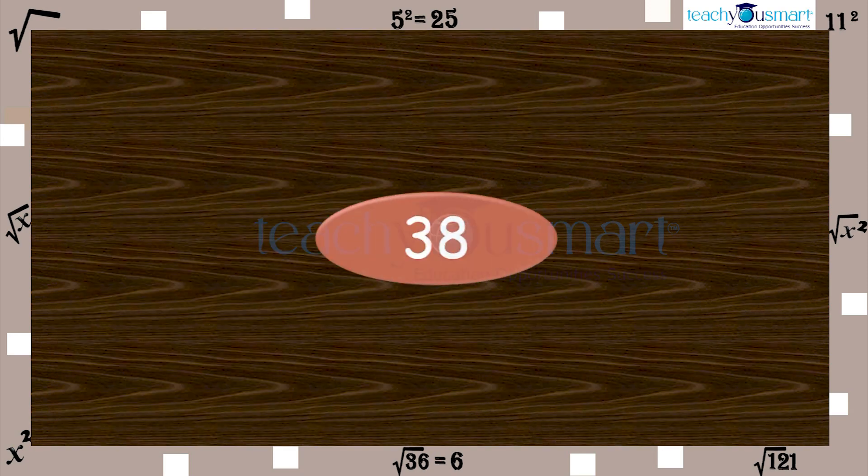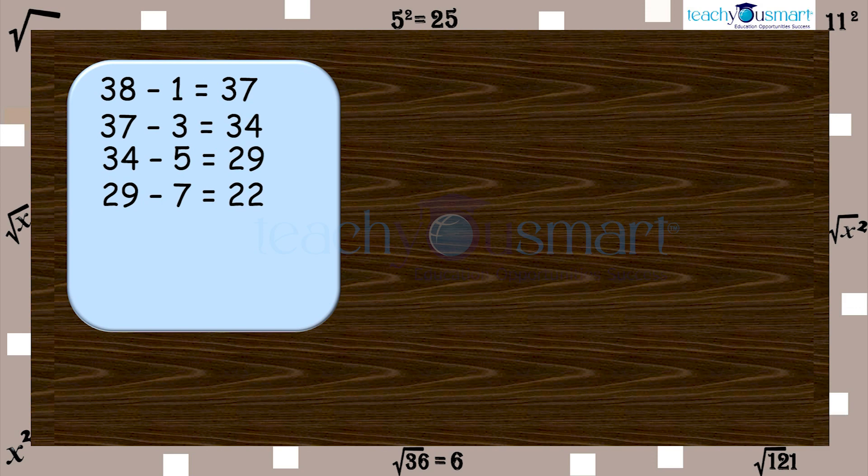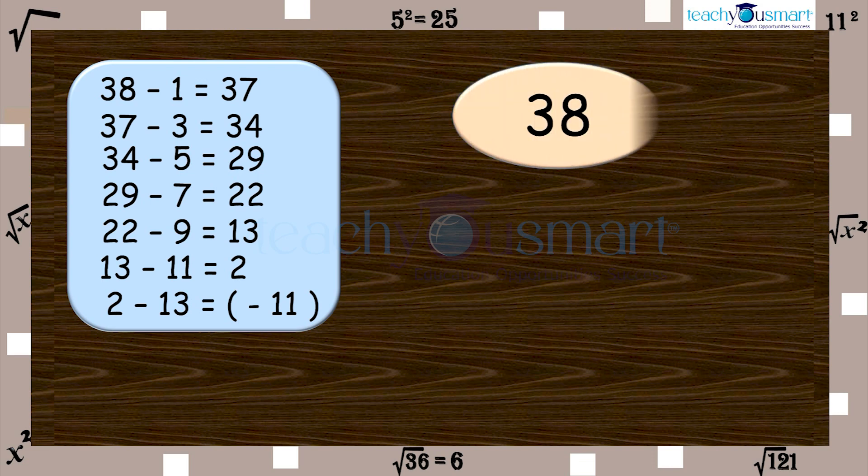Let's consider another number 38, and again do as above. 38 minus 1 equals 37, 37 minus 3 equals 34, 34 minus 5 equals 29, 29 minus 7 equals 22, 22 minus 9 equals 13, 13 minus 11 equals 2, 2 minus 13 equals minus 11. This shows that we are not able to express 38 as the sum of consecutive odd numbers starting with 1, also 38 is not a perfect square.